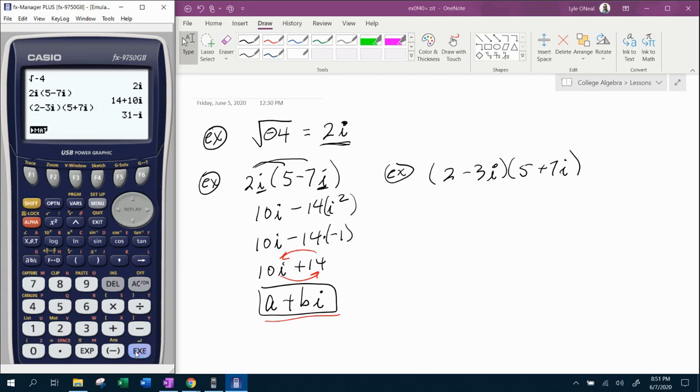2 minus 3I times 5 plus 7I. And the calculator is going to do the FOIL method, combine like terms, replace the I squared with negative 1. It's going to simplify it for you. Do all the work. So, even if you have to show your work, the calculator is still a nice tool to check your work.